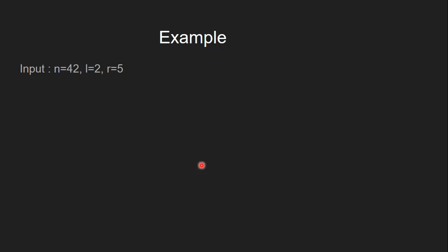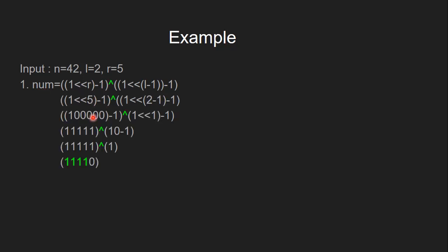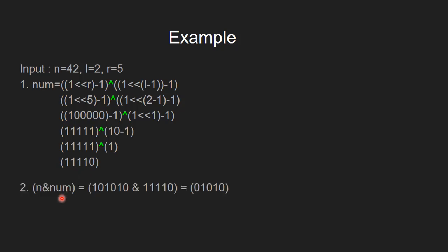Let's understand this using an example — the same example: n equals 42 and the range is from l equals 2 to r equals 5. First we find our number num. Here I have shown the stepwise calculation. At the end we can see we have a binary number with r equals 5 bits, and bits from the range l equals 2 to r equals 5 are the set bits. Now in the second step we find the bitwise AND of num and our number n. This isolates the relevant bits, and finally we count the number of set bits in this number.